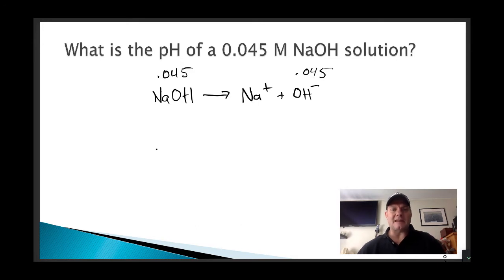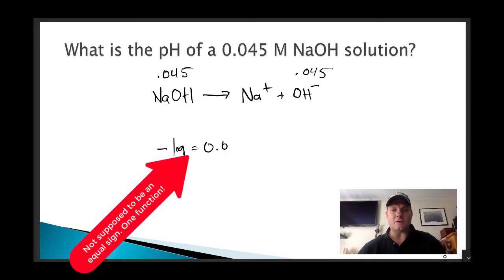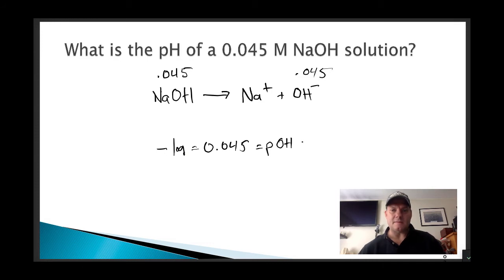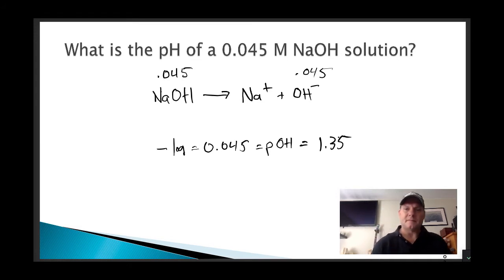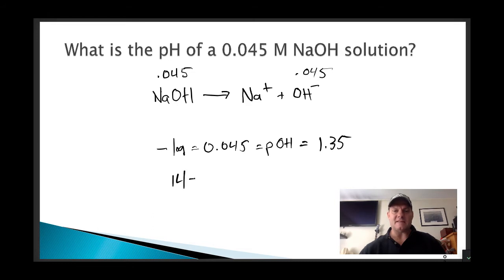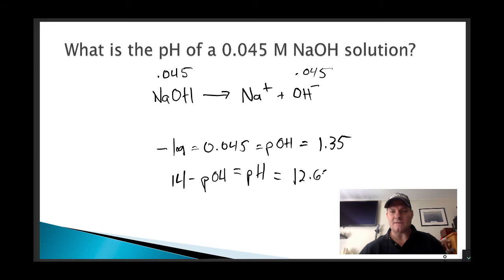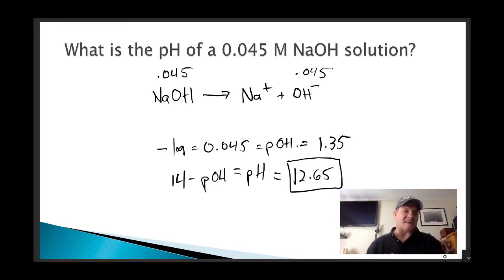We simply take the negative log of 0.045 to get the pOH, which turns out to be 1.35. Because we did the negative log of the hydroxide, we have a pOH, so 14 minus 1.35 gives us a pH of 12.65. I just have to subtract from 14 because it's a hydroxide and we were asked about pH.